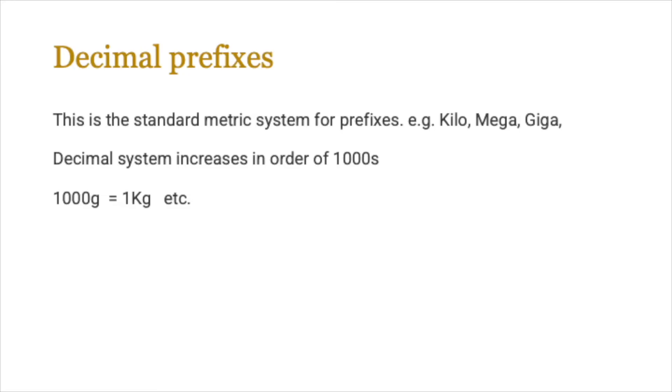So hopefully you've got a good idea about what decimal prefixes and binary prefixes are like. Decimal prefixes, remember the term prefix means adding something in front of a number. So in this particular case, when we use the standard metric system for prefixes, they tend to be kilo, mega and giga, and the decimal system increases in orders of thousands. So one thousand grams is equal to one kilogram, and we use something similar which most people are familiar with in their day-to-day life.